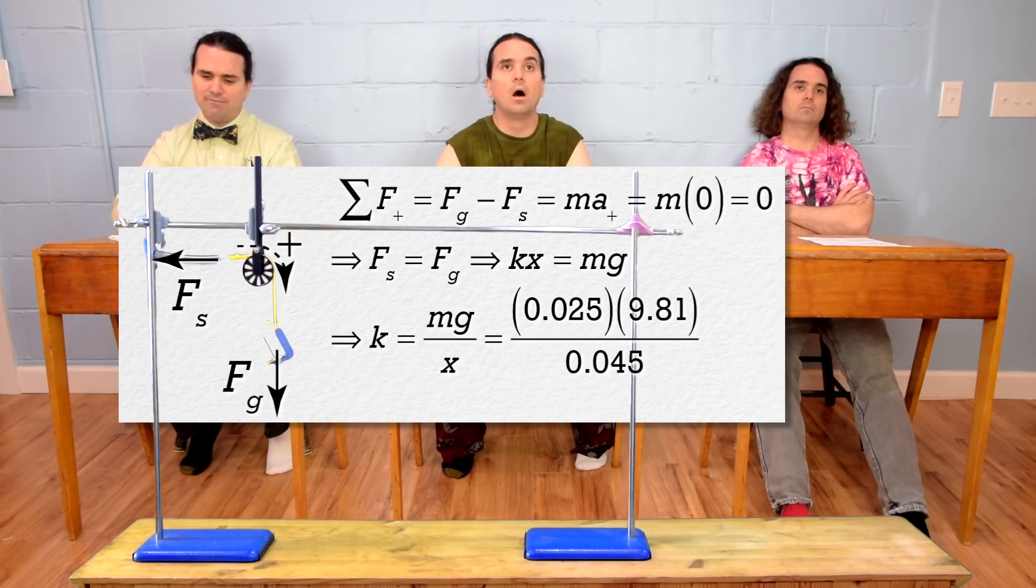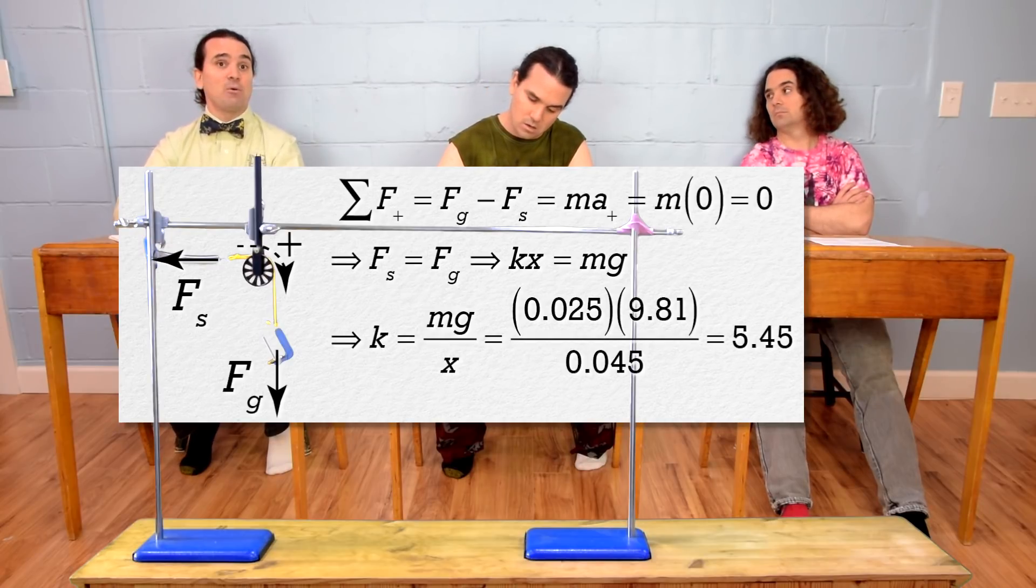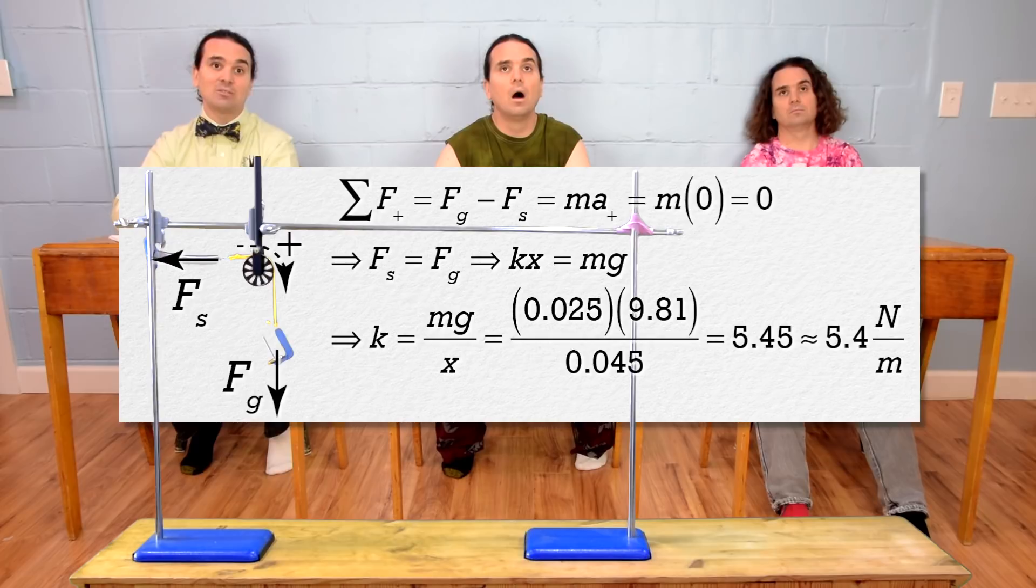That works out to be 5.45 or 5.4 newtons per meter using two significant digits and remembering the arcane rounding rule, which says we always round to an even number when the number to be rounded ends in a perfect five.